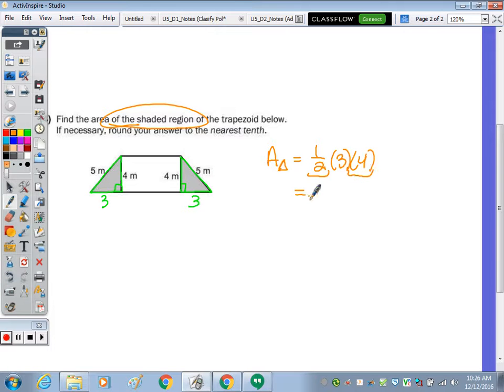So the area of the triangles is 1 half base of 3 times height of 4. Well, half of 4 is 2, and 2 times 3 is going to be 6. So the area of a triangle is 6. And so the area of the shaded is going to be 2 times 6, because we have two triangles. So that's going to give us a total area of 12 square meters.